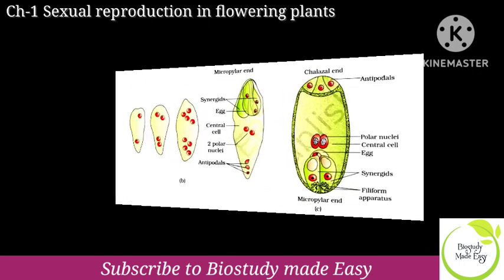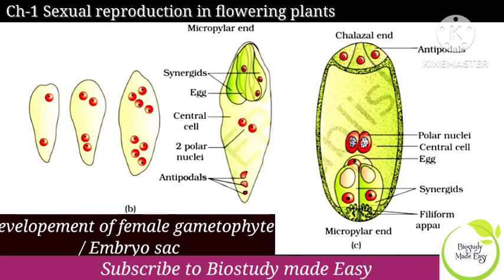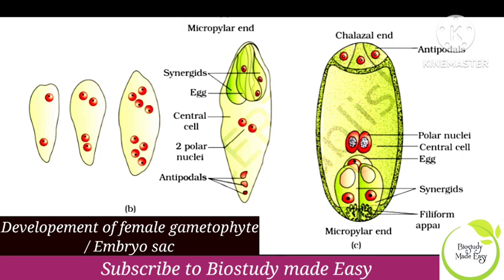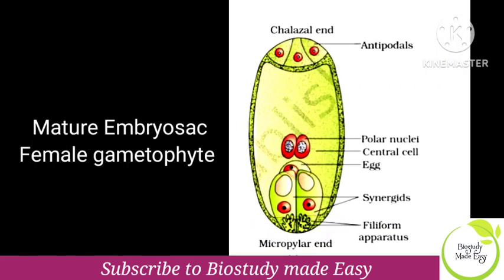Next diagram is the development of female gametophyte or embryo sac. If you have a big diagram, you can see it clearly. So note that. Next, you have the mature embryo sac — that is, female gametophyte diagram. You can see five marks.